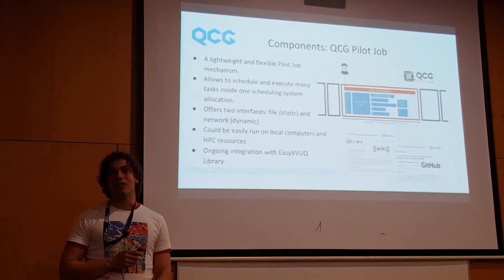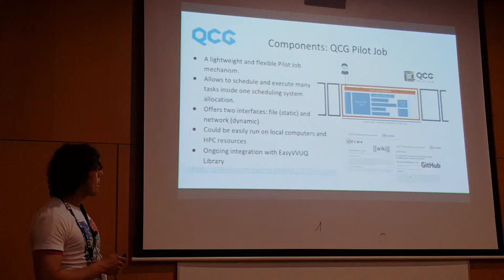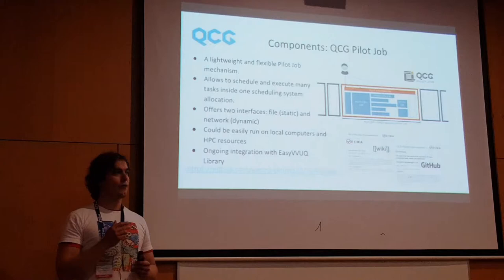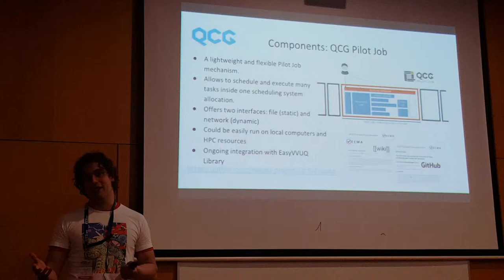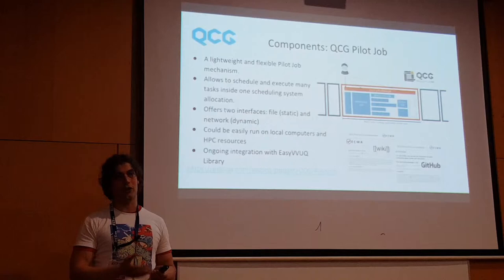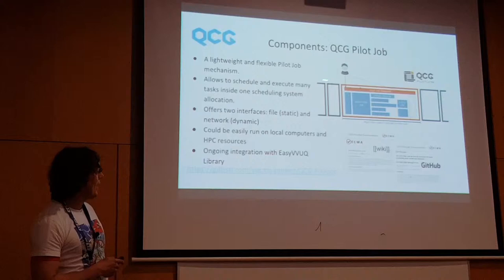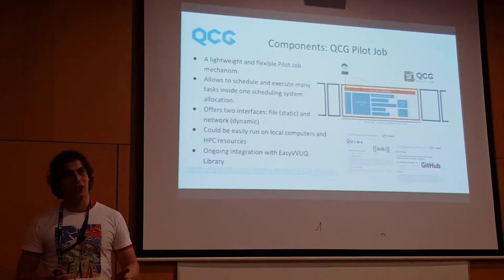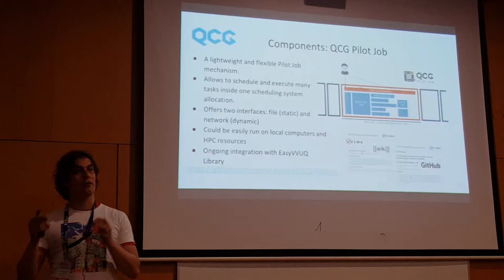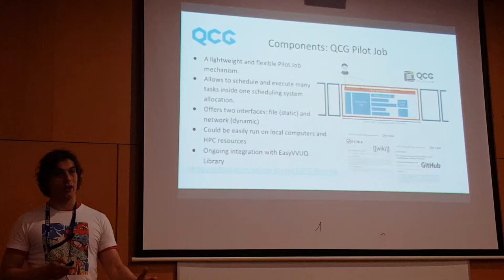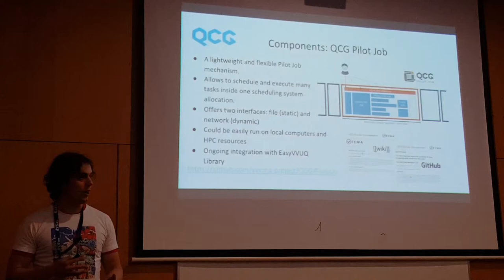A very interesting component in the toolkit is QCG Pilot Jobs. The idea of pilot jobs is that if you submit a job to a supercomputer it gets in the queue, you wait, and then it starts. That's fine for one job, or even ten. But if you have a hundred or a thousand jobs you run into a problem, because many supercomputers only allow you to queue a limited number — for instance Archer allows only eight jobs at a time. With QCG Pilot Job you can book one slot for say twelve hours and two thousand nodes, then fill that slot with as many jobs as you like. You can even have a Python script that runs in the slot and dynamically creates jobs and analyzes data locally on the supercomputer.